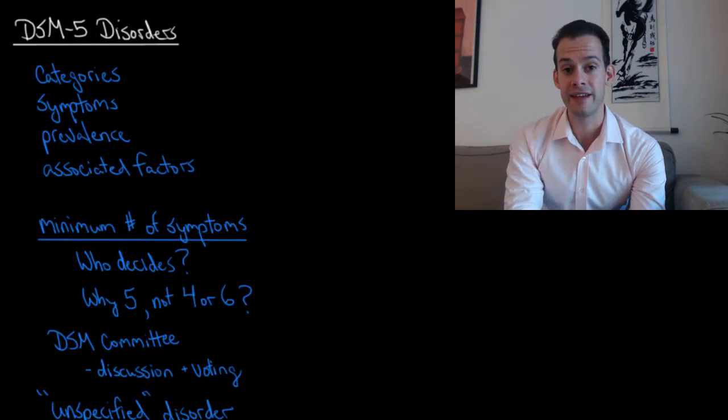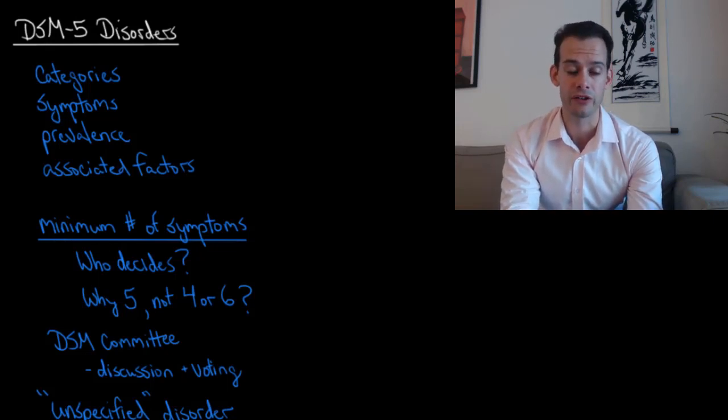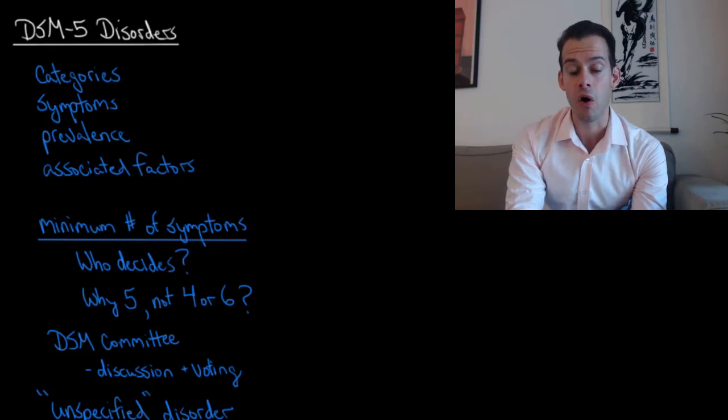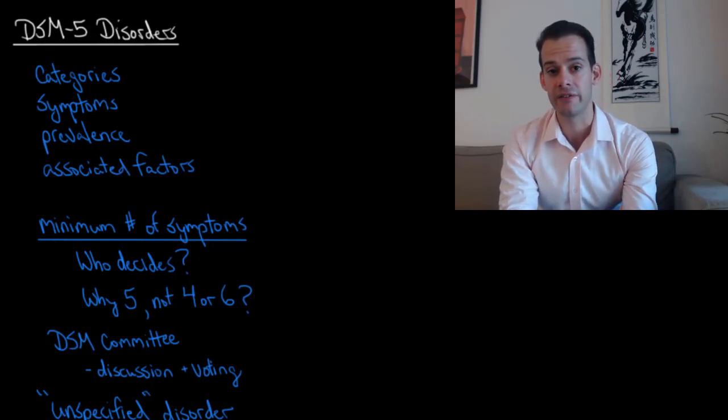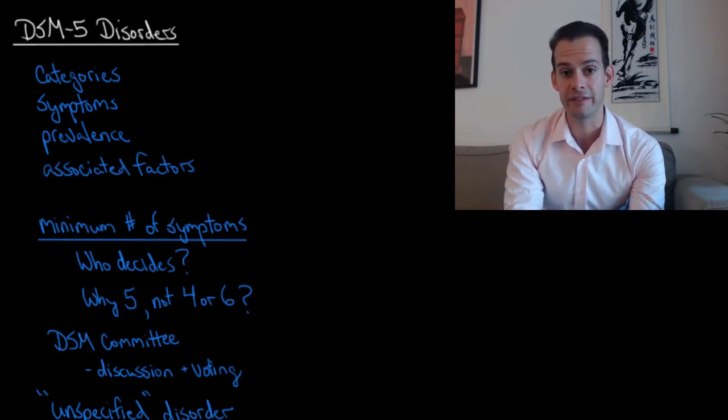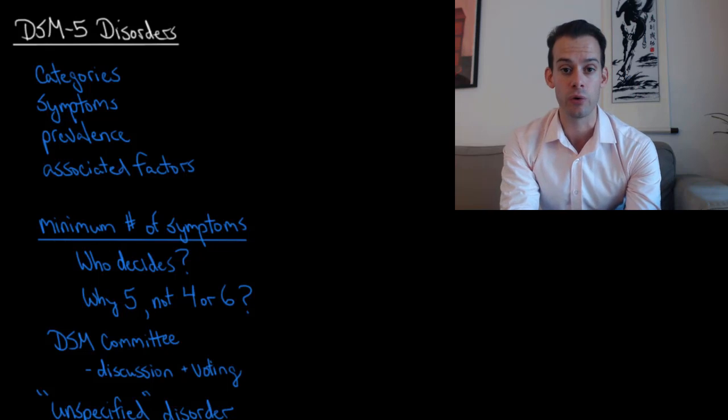Now the first thing to note is that in the DSM-5 you find categories of disorders. So disorders that are similar or that have similar types of symptoms are grouped into categories. So for each video in the rest of this unit I'm going to introduce a category that you'd find in the DSM-5 and then I'll talk about some particular disorders in that category.